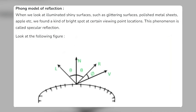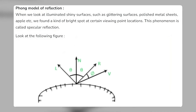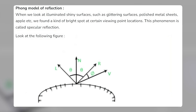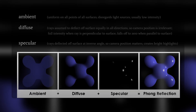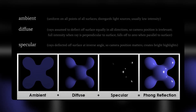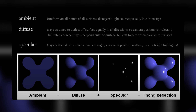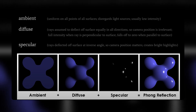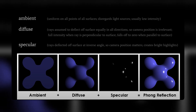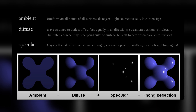Facelit also uses a Phong reflectance model to account for the lighting effects on the face surface. A Phong reflectance model is a mathematical formula that describes how light reflects off an object based on its material properties, such as diffuse color, specular color, and shininess. Facelit learns these properties from the input image using another neural network, then uses a rendering process to synthesize a new face image from the neural volume and the Phong reflectance model under any desired lighting condition and viewpoint.